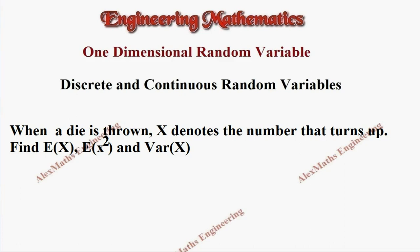Hi students, this is Alex here. In this problem I have given when a die is thrown, X denotes the number that turns up. We have to find E(X), E(X²) and variance of X.